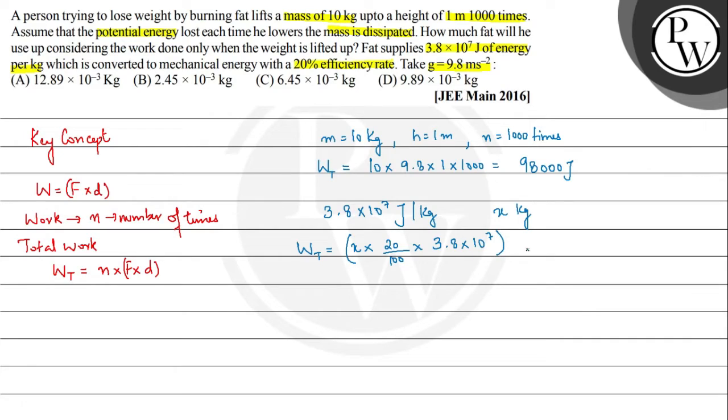We have our net work calculated as 98,000 joules. Which implies 98,000 joules equals x × (20/100) × 3.8 × 10^7. If we resolve, then we get x is approximately equal to 12.89 × 10^-3 kg.